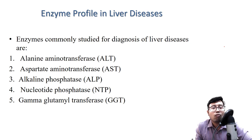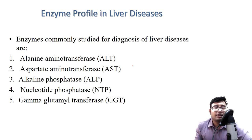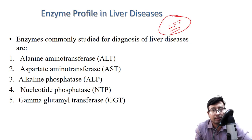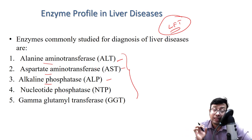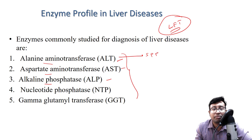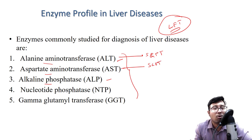What enzymes indicate liver dysfunction? When a physician prescribes LFT (liver function test), at least three enzymes are tested: alanine aminotransferase (ALT), aspartate aminotransferase (AST), and alkaline phosphatase (ALP). They indicate liver function, and if raised, they indicate some form of liver disorder. ALT is also known as SGPT (serum glutamate pyruvate transaminase), and AST is also known as SGOT (serum glutamate oxaloacetate transaminase).